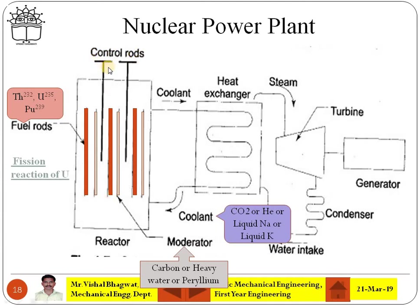The control rods are made of cadmium or boron tubes. The function of control rods is to absorb neutrons involved in the reaction. The moderator alone cannot control the reaction, so control rods are required. With the help of control rods and moderators, you can control the reaction at a specific rate and also control the rate of heat generation. Moderators slow down neutron speed, while control rods absorb neutrons to control the reaction.